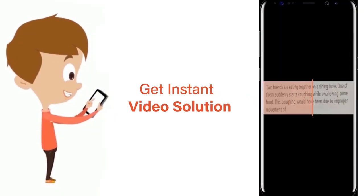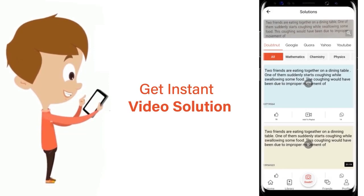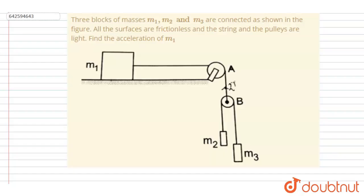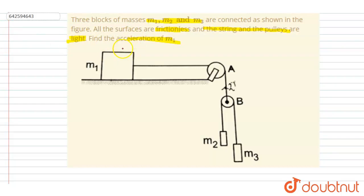Three blocks of mass m1, m2, and m3 are connected as shown in the figure. All the surfaces are frictionless and the strings and pulleys are light. Find the acceleration of the mass m1. So let's take the acceleration of mass m1 as 'a'.